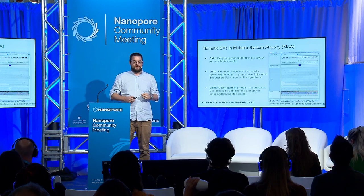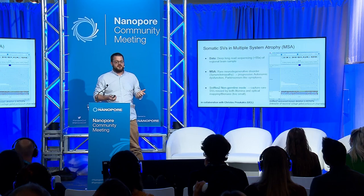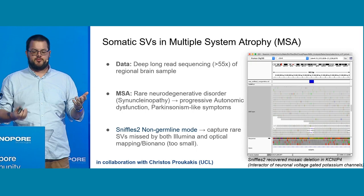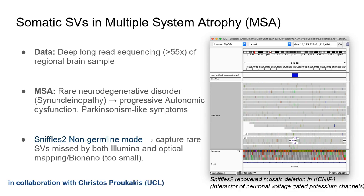We also sequenced an MSA brain sample in collaboration with Christos, and identified a candidate SV, comparing it to bulk Illumina and optical mapping. We produced seven or eight runs of single-cell Illumina data to compare our ability to detect this variant at low allele frequency against single-cell genomics approaches.